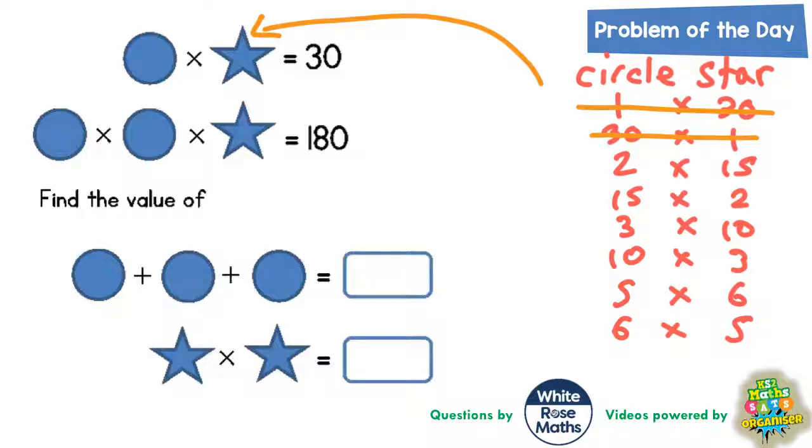Next we can try the circle being worth 2 each and the star being worth 15. Well, 2 times 2 is 4 and 4 times 15 is 60. Again, no good because we're trying to make 180. But what about the other way round? What if the circles are 15 and the star is 2? Well, 15 times 15 would be 225, so that's going to take us way over 180, so we don't even really need to bother finish working that one out.